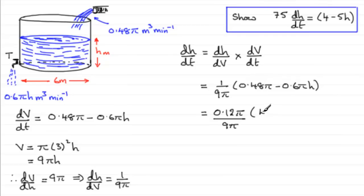Well it's going to be a 4. And 0.12 times 4 then is 0.48, and 0.12 times 5 would give me 0.6, so that's going to be minus 5h.